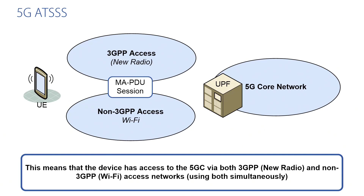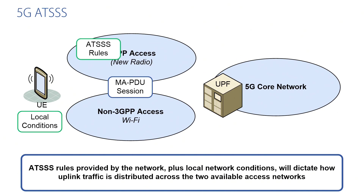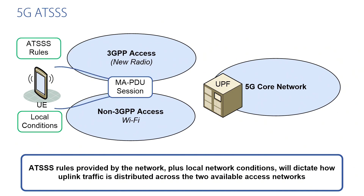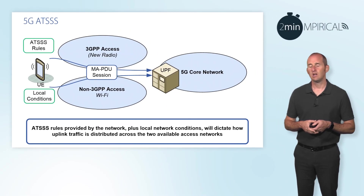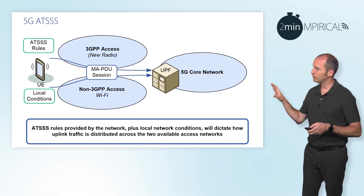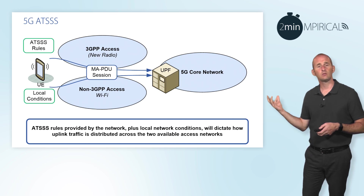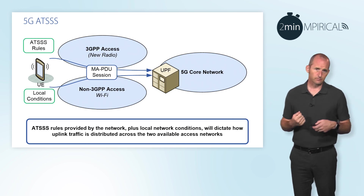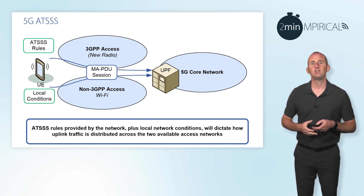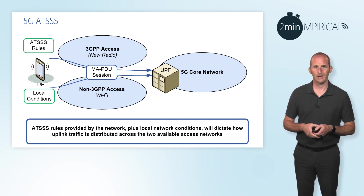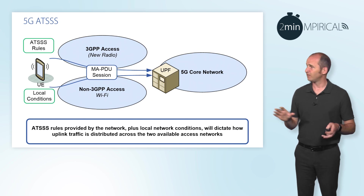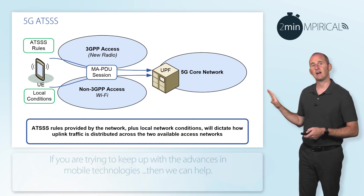Now to do this, the device will be configured with basically rules that will define how these different access networks should be used. Those rules could be based on local conditions, and they'll also be based on information sent to the device from the core network — that's for the uplink direction.